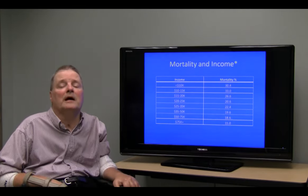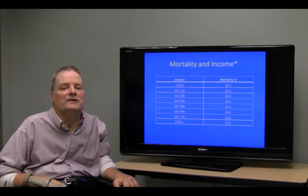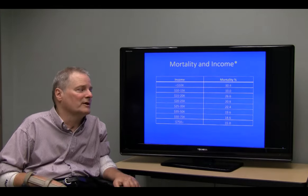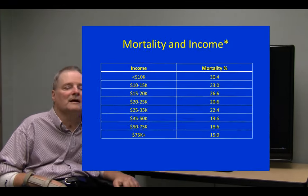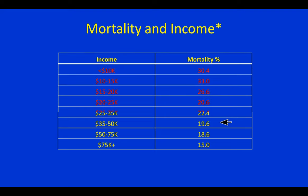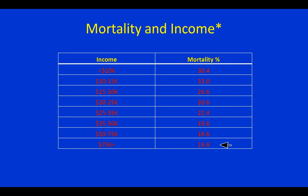We're first going to show you a table on mortality and income. These are crude mortality rates as related to familial income levels. Income starts at the lowest level in the top left portion of the table and gets increasingly higher up to a maximum of $75,000 or greater. Mortality is highest in the lowest income group and tends to decrease as we go down the table, with the lowest figure at $75,000 and greater.